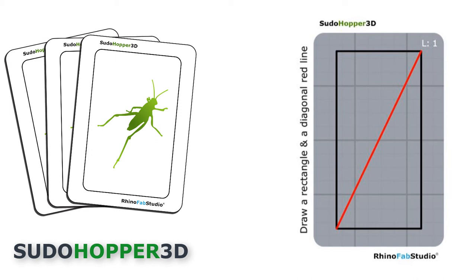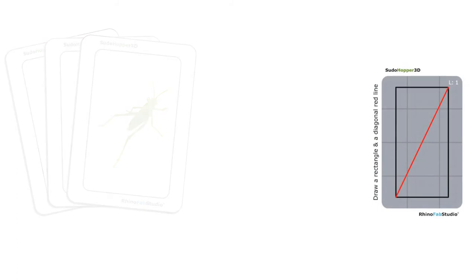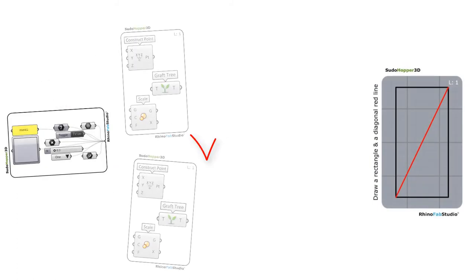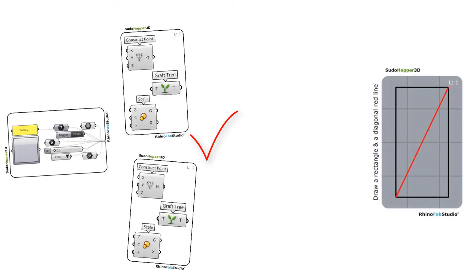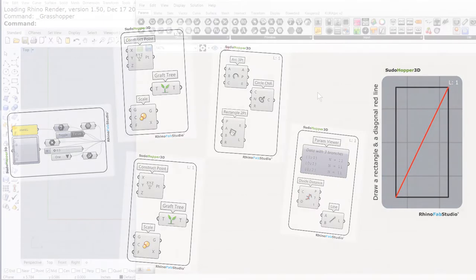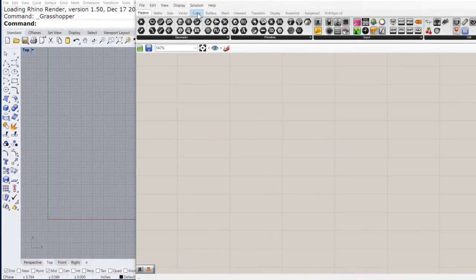To solve this assignment, we need a few cards: the numeric slider, check; points, check; rectangle, check; and a line. So let us start.